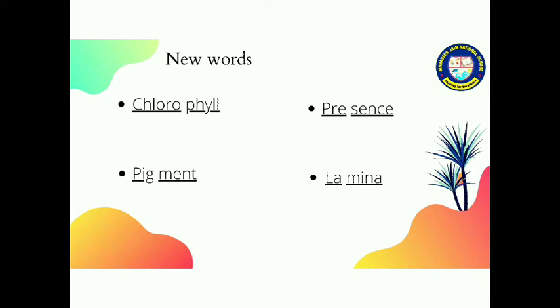Third word is pigment, P-I-G-M-E-N-T. Pigment means to have a substance. Some things are called substance, we say pigment.